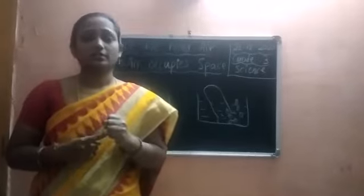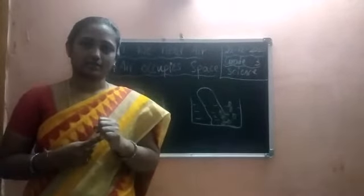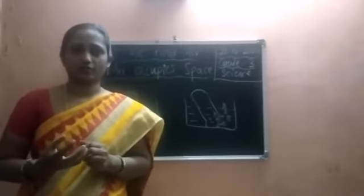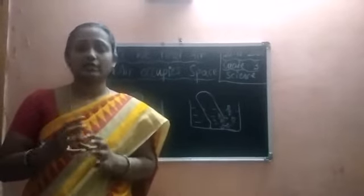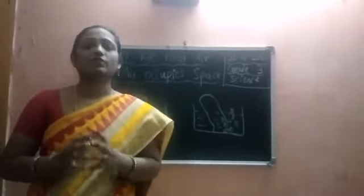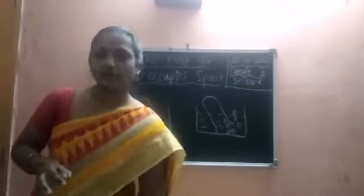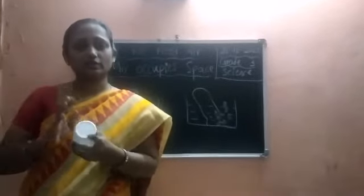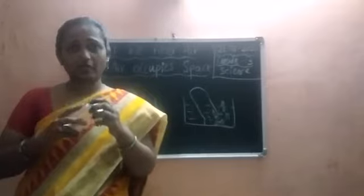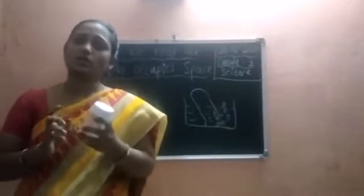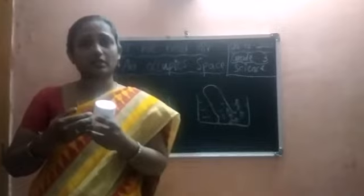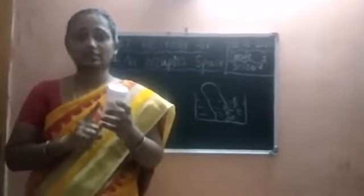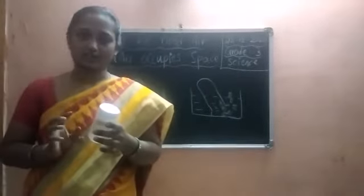We also learned that air has mass and occupies some space. When we blow a balloon, air occupies the space inside the balloon. When we take a container like a bottle, it occupies the space of the container. So what is present inside the bottle? Air is present. Let us learn by an activity how the air is occupying space in this bottle.